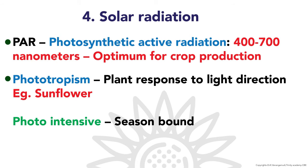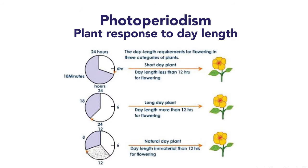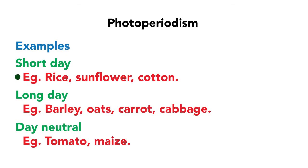Phototropism is the plant's response to light direction; the classical example is sunflower. Photosensitive varieties are season-bound crops. Photoperiodism is the plant's response to day length. If day length is less than 12 hours, that is a short day plant; more than 12 hours is a long day plant; no influence of day length is a day neutral plant. Examples: rice, sunflower, and cotton for short day; barley, oats, carrot, and cabbage for long day; tomato and maize for day neutral crops.